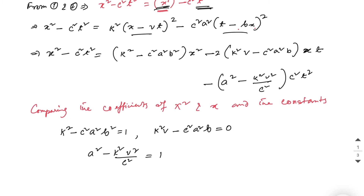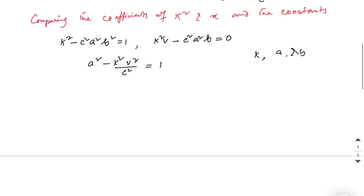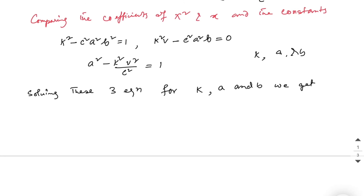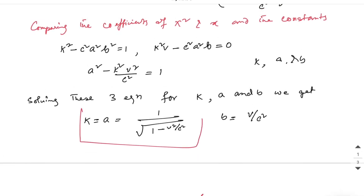Solving these three equations for k, a, and b, we get: k = a = 1/√(1 − v²/c²) and b = v/c². Now let us use these values of k, a, and b in the original equations.